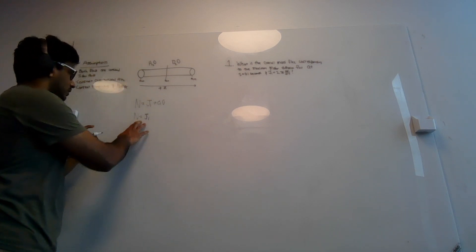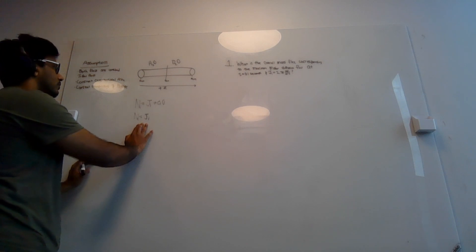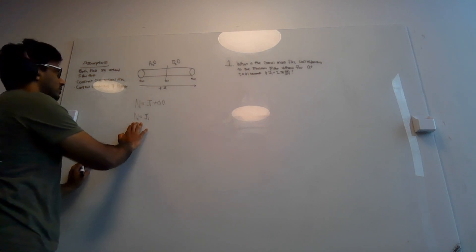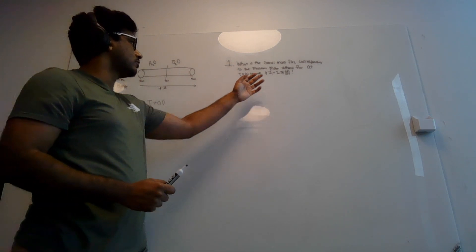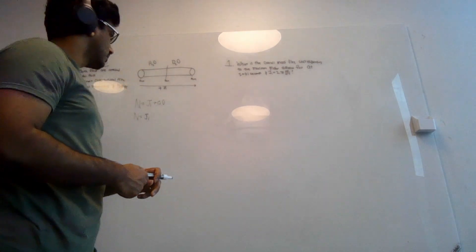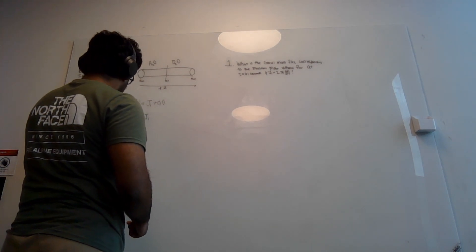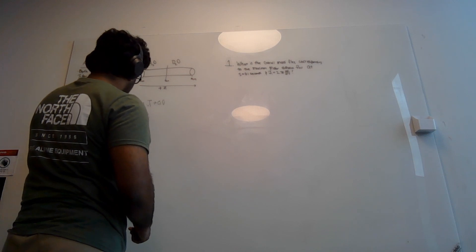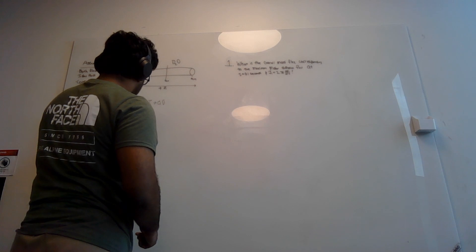When we cancel this term out of the molar flux equation, we can say that the molar flux equals the molar diffusive flux. Therefore, the molar flux of H2O equals the molar diffusive flux, which is stated in the problem as 2.78 moles per meters squared per second. So the molar flux of H2O equals 2.78 moles per meters squared per second.